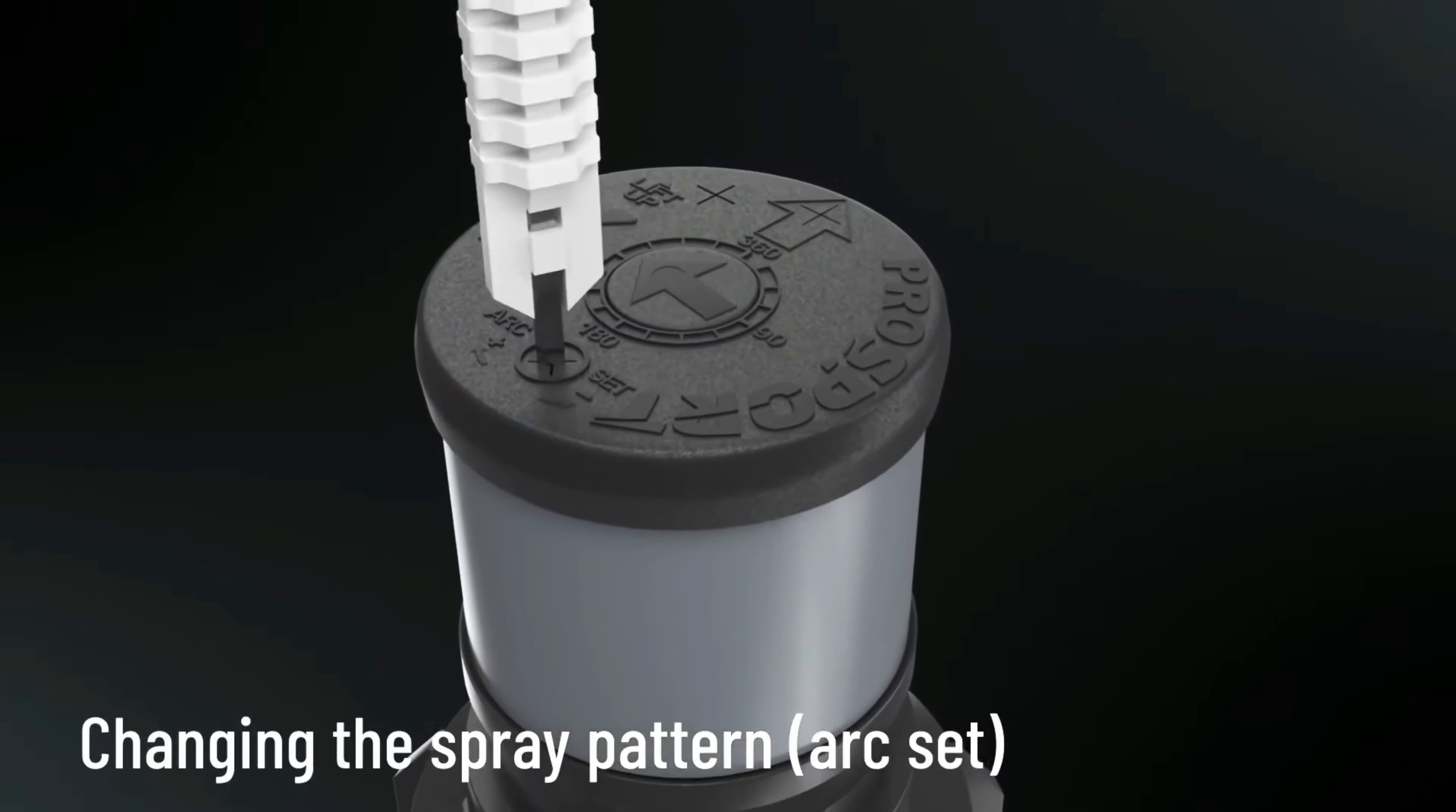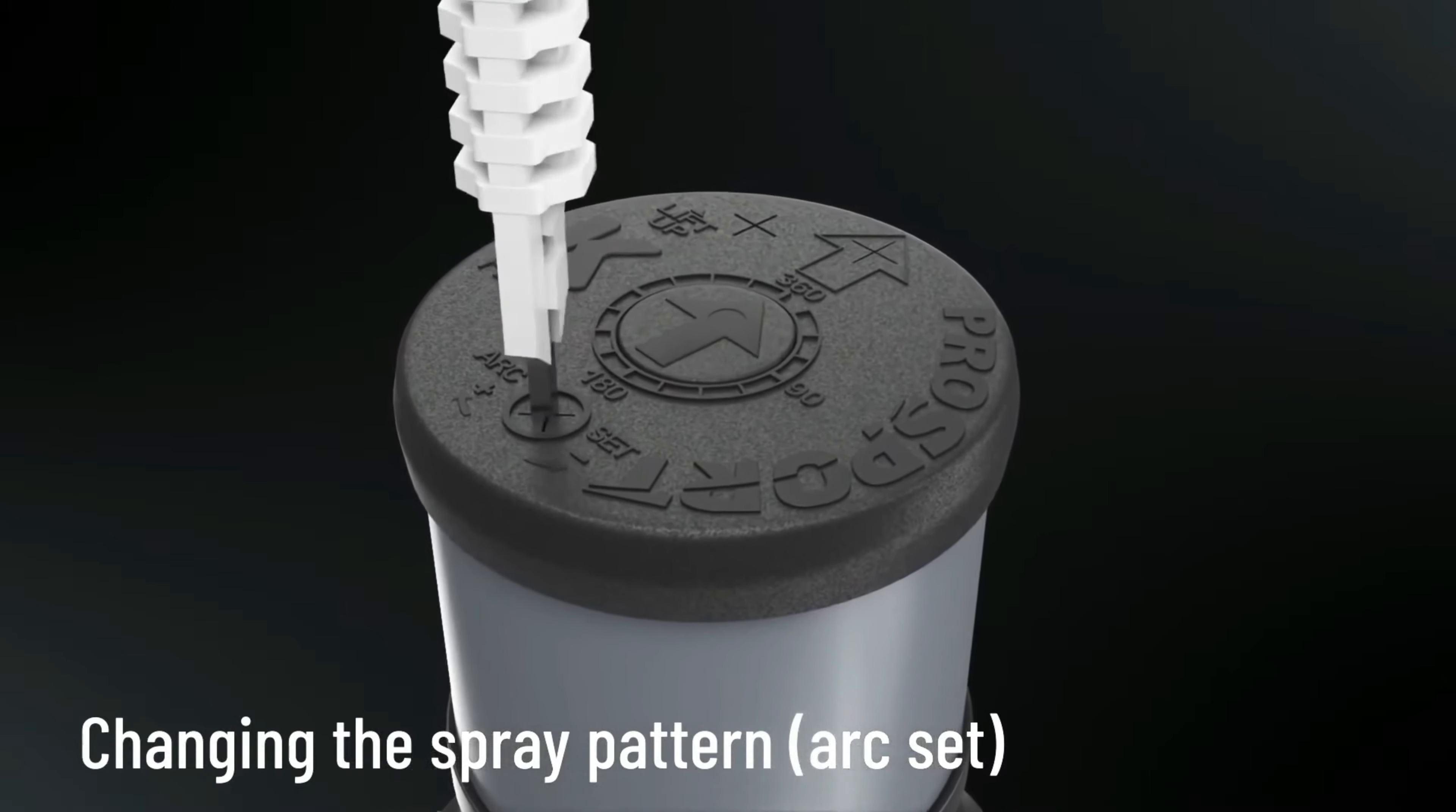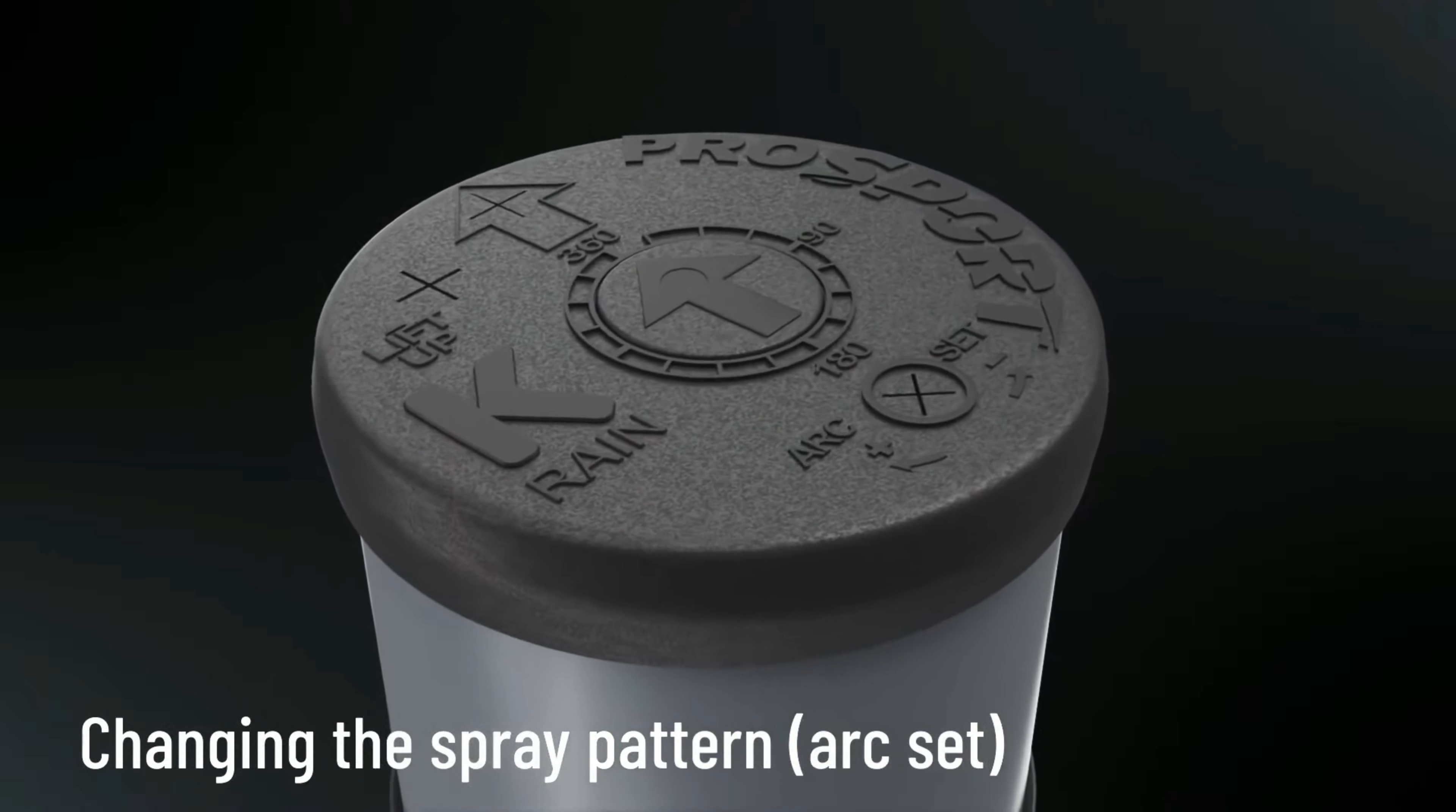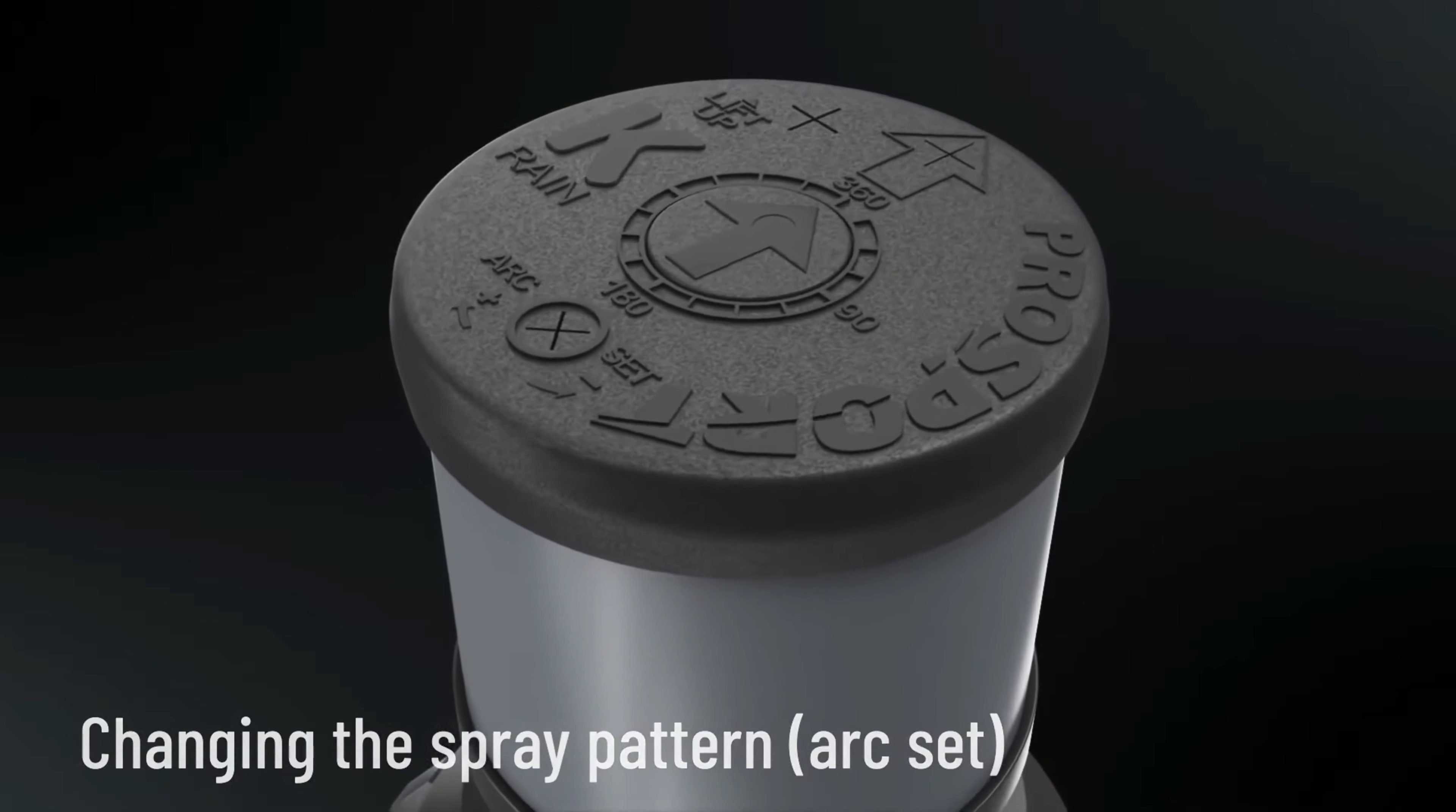Insert the flat metal end of the key into the arc set slot. Turn clockwise or counterclockwise to increase or decrease the spray pattern. When set at 360 degrees, the ProSport will rotate continuously in a clockwise direction.